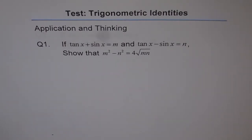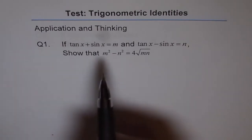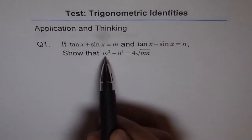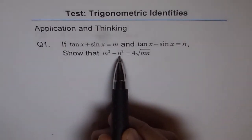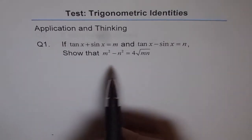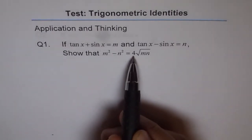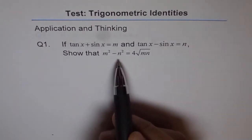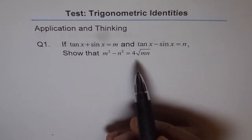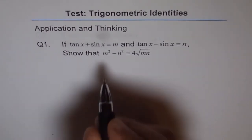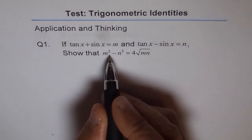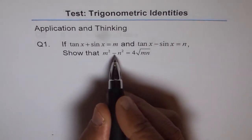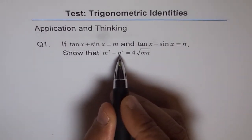Now this is how I am going to do it. I will figure out what m squared minus n squared is, and also what 4 times the square root of mn is. If both are the same, then they are equal. Let me start with the left side, which is m squared minus n squared.